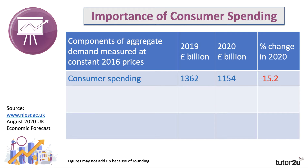We're looking at aggregate demand in real terms, measured at constant 2016 prices. You can see that in 2019, consumer spending was just a shade under 1.4 trillion pounds. This is household spending on goods and services — from cars to washing machines to healthcare treatments to holidays. Now in 2020, during the recession — this is a forecast from the National Institute — consumer spending has fallen dramatically.